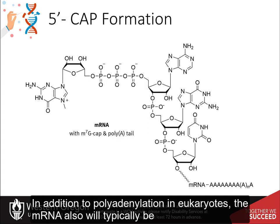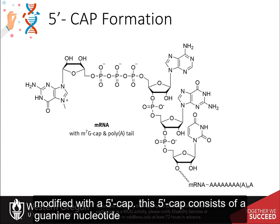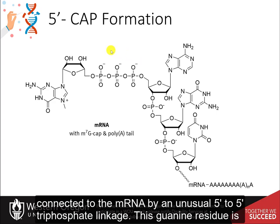In addition to polyadenylation, in eukaryotes, the messenger RNA also will typically be modified with a five prime cap. This five prime cap consists of a guanine nucleotide connected to the messenger RNA by an unusual five prime to five prime triphosphate linkage.